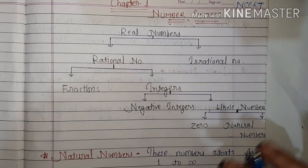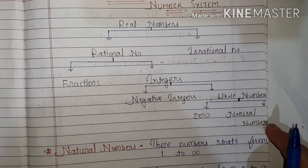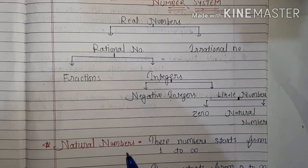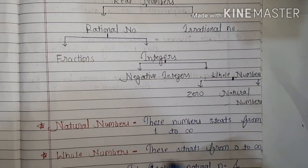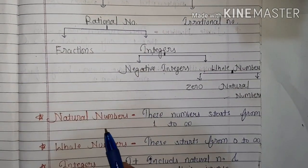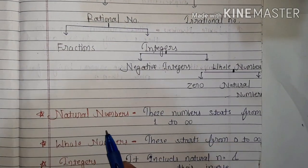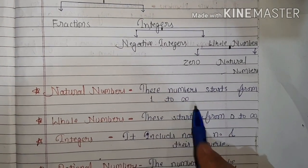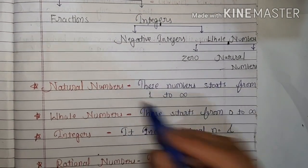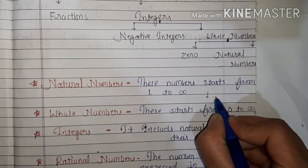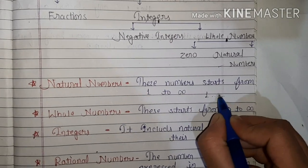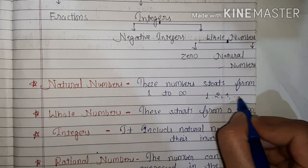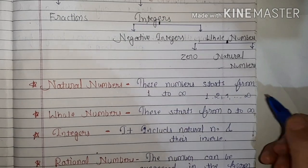We will start with natural numbers. What are natural numbers? These numbers start from one to infinity — they are made by one, two, three and so on, till infinity.